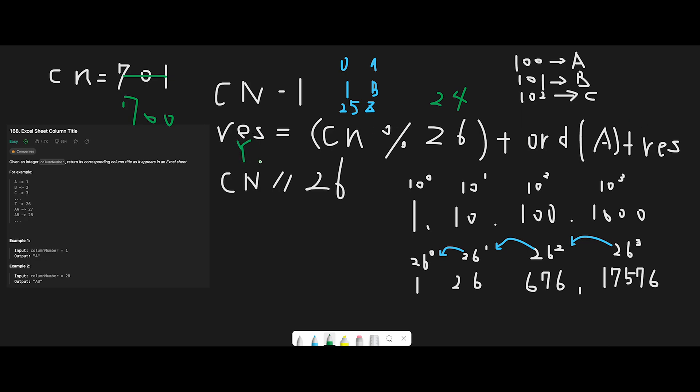And then next, divide column number by 26 (number of alphabets), so that should be 26. So this is 26. And then next, we repeat this process until column number is zero or less than zero.